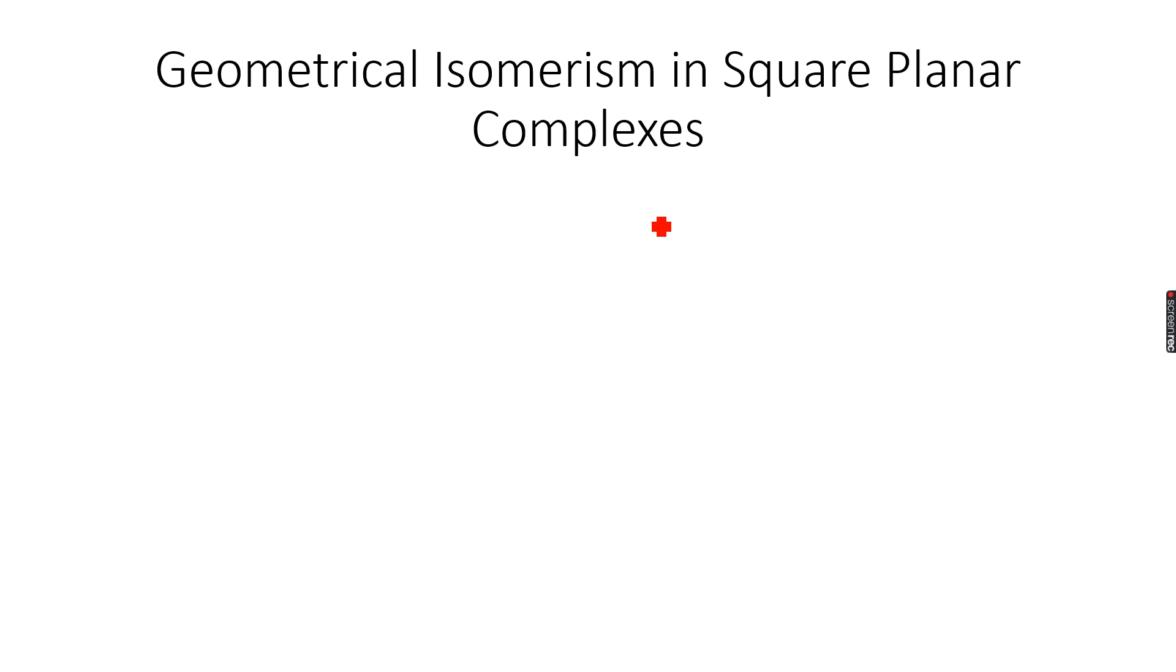Okay, so our last part of isomerism: geometrical isomerism in square planar complexes. For this it is very simple. We have X²⁺ and we have A, A, B, and B. Square planar complexes only exhibit geometrical isomerism. So you have A, A, B, and B adjacent. This will be the cis isomer.